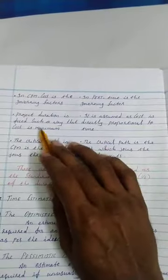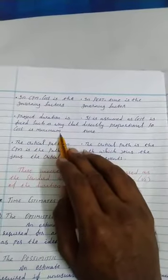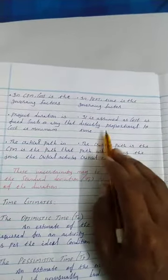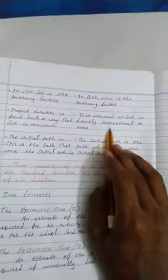The project duration is fixed in such a way that cost is minimum. It is assumed as cost is directly proportional to time because cost and time are directly proportional here.